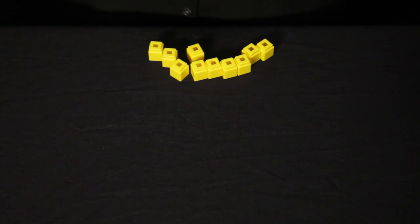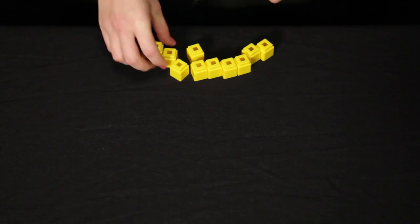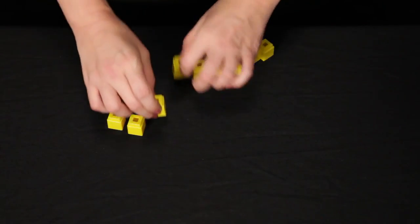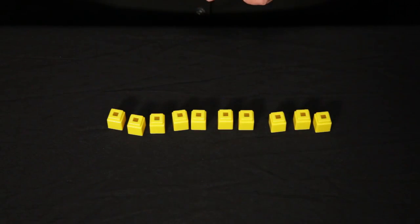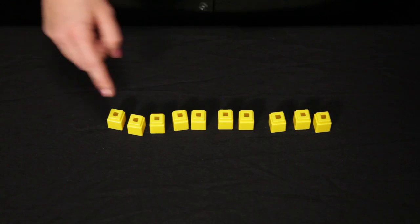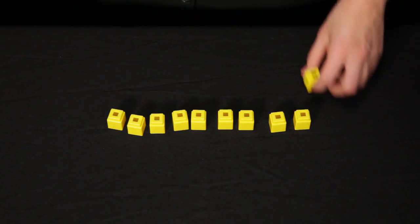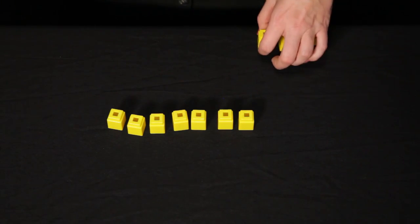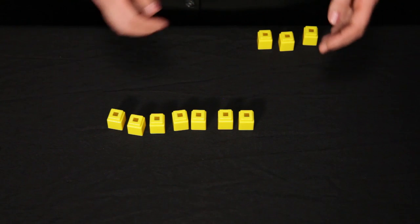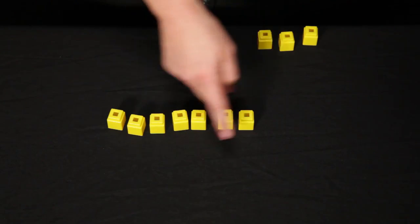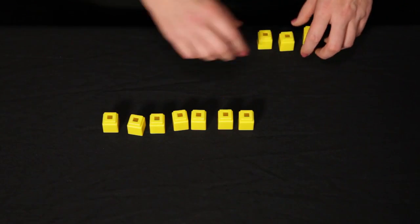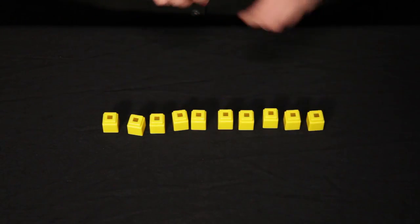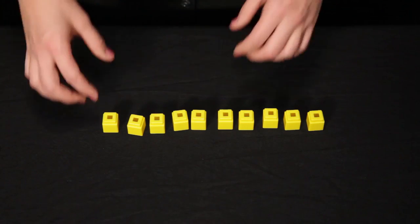There are two concepts of subtraction that students should understand. The first is taking away. So I have a set of objects: 1, 2, 3, 4, 5, 6, 7, 8, 9, 10. And I'm going to take away from this set. I'm going to take away 3: 1, 2, 3. When I had 10 and I took away 3, I have 7 left. So that is the takeaway model. The other model of subtraction is understanding subtraction as comparison.